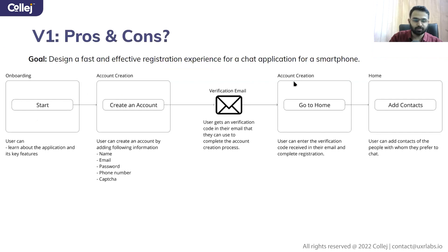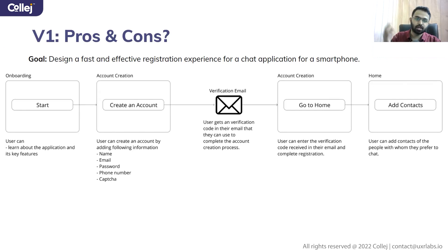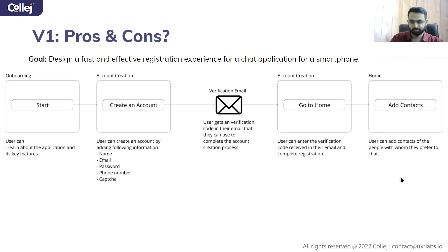Let's look at one quick example. The goal is to design a fast and effective registration experience for a chat application on a smartphone. You have an onboarding screen, then an account creation screen where the user must provide name, email, password, phone number, and CAPTCHA. You then receive a verification email, enter the verification code, and proceed to the home screen to start using the application. This is one flow of the registration experience — what are the pros and cons?